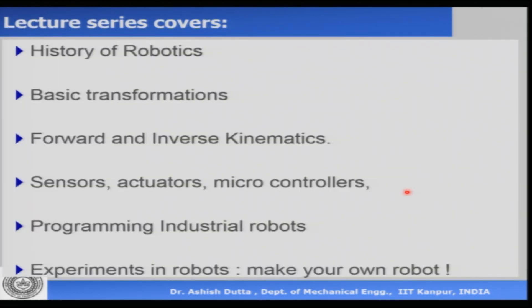The first topic would be the history of robotics — where did robots come from, and where did the word robot come from? Next, robots essentially move in space, so when an arm moves in space to do a particular task, we need some basic mathematics or basic transformations that correlate the end effector or gripper of the robot with the task it is going to do. That is how the robot controller works.